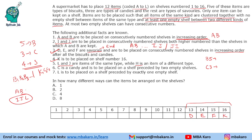C is a candy and has to be placed on a shelf preceded by two empty shelves. So C is one of the candies. Now I, J and L cannot be candies — if they were, we would have a total of four candies. So I, J and L are biscuits.